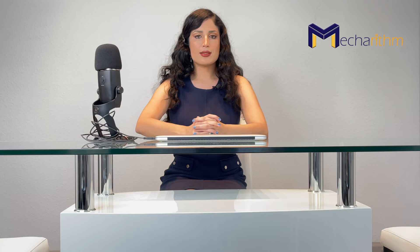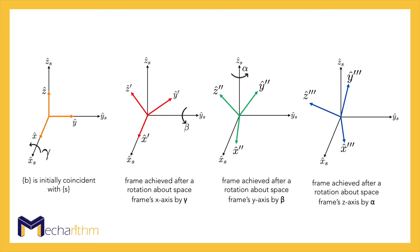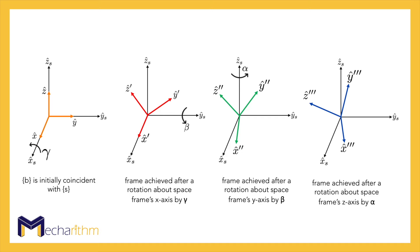In the previous lesson, we learned about Euler angles and we saw that Euler angles refer to the angles in a sequence of rotations relative to the body-fixed frame. Roll-Pitch-Yaw angles, on the other hand, are a sequence of rotations about the space frame axes. If you want to know more information about the space frame and the body frame, please refer to the lesson on Introduction to Configurations. The body frame is initially coincident with the space frame, so it starts from the identity rotation.